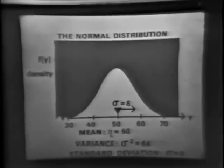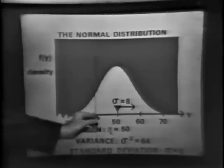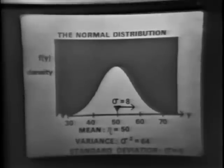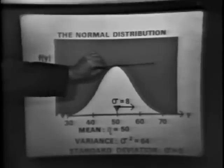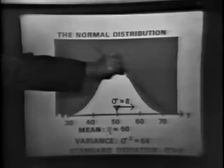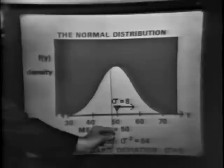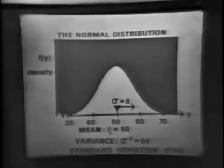What does it mean geometrically? The distance from the mean out to the point of inflection on the curve is 8 units — that happens to be the standard deviation. That's true for all normal distributions. The point of inflection is the point where the curve gets most steep before it starts getting more shallow. You can always define the standard deviation for any distribution, but for the normal distribution it has this important and interesting geometric definition.